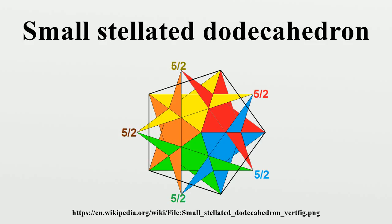It shares the same vertex arrangement as the convex regular icosahedron. It also shares the same edge arrangement with the great icosahedron. It is considered the first of three stellations of the dodecahedron.